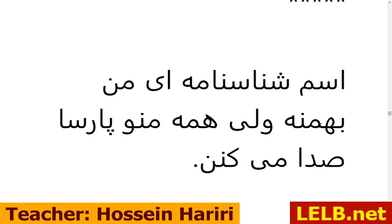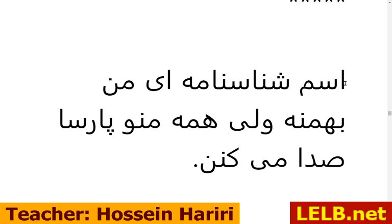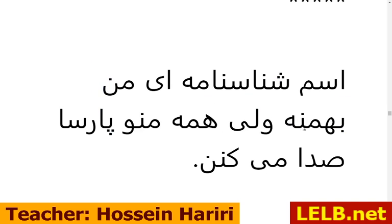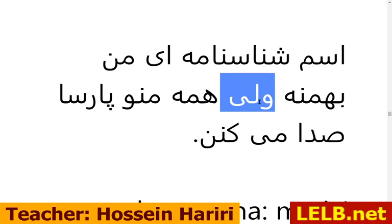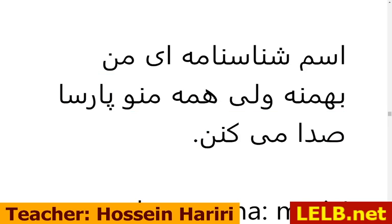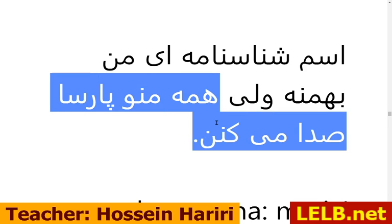اسم شناسنامه‌ای من بهمنه — اسم شناسنامه‌ای means 'birth certificate name,' i.e., your real name as written in your birth certificate. شناسنامه means 'birth certificate.' So my birth certificate name is Bahman, ولی — but — همه منو پارسا صدا می‌کنند — everybody calls me Parsa.